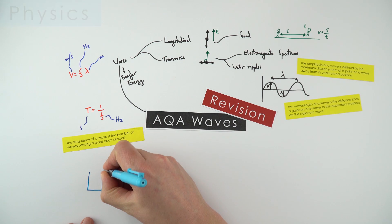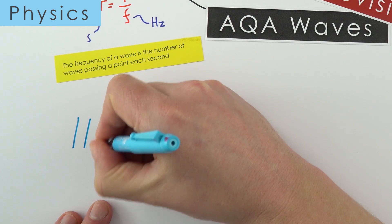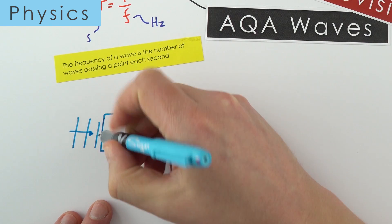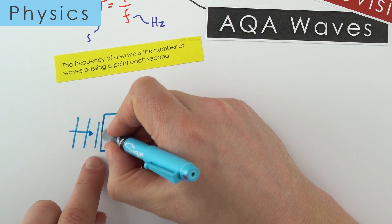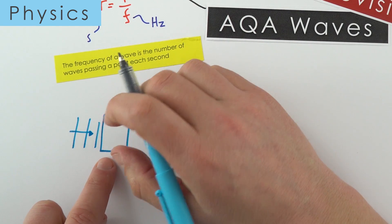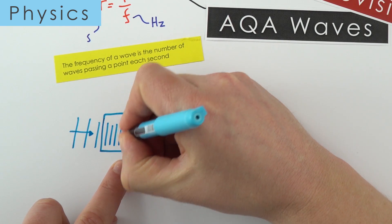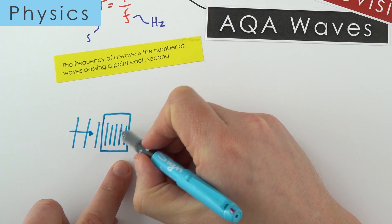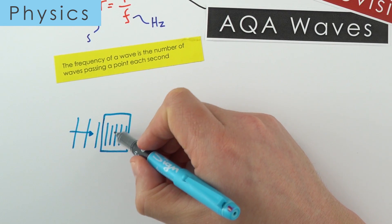If you have another material and waves are approaching it, sometimes those waves can be reflected, which means they bounce back. Sometimes they can be absorbed, which effectively means they're stopped. And sometimes they are transmitted through that material. As they go through that material, certain things change. It might be that their wavelength decreases or their speed decreases as well.